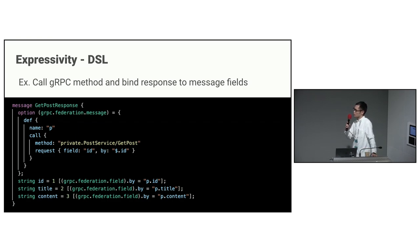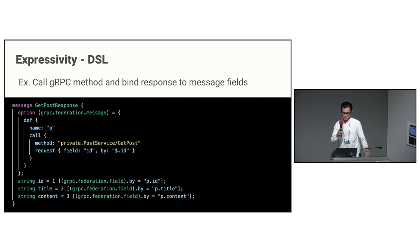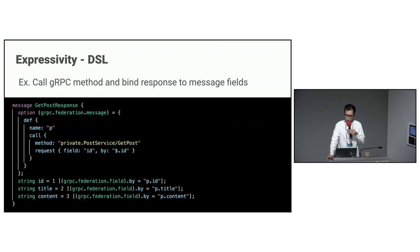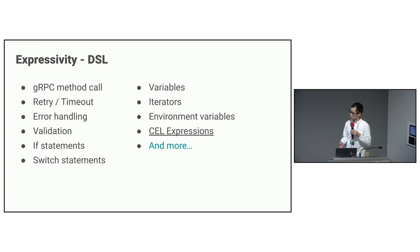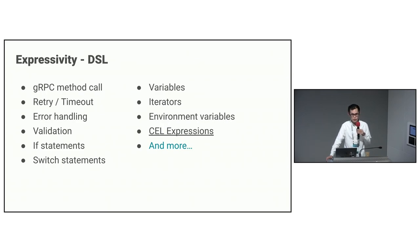There are three important perspectives of zRPC Federation: expressivity, extensibility, and productivity. The DSL of zRPC Federation has high expressivity and can represent complex logic. This is an example where the response of the zRPC method is assigned to a variable named P, and then it is mapped to each field. Besides zRPC method calls, the DSL supports various features required for service development, such as retries, timeouts, error handling, and conditional branching. If you are interested, please refer to the documentation.